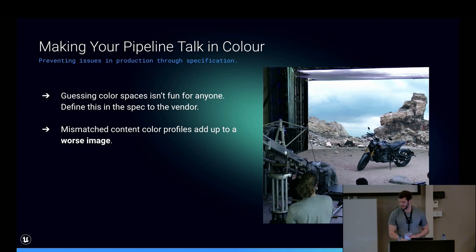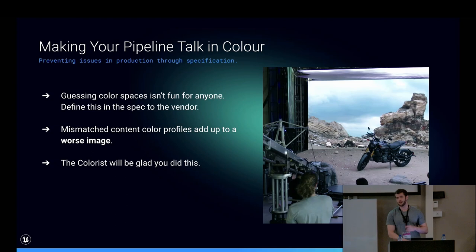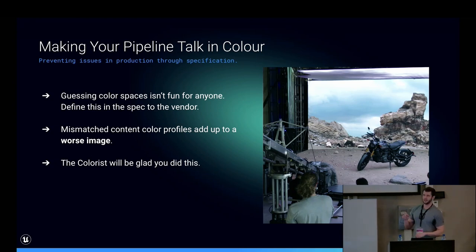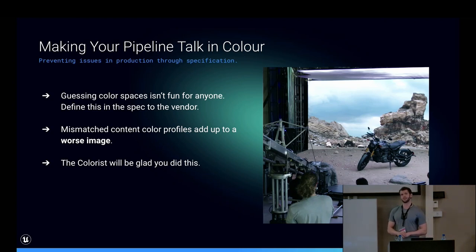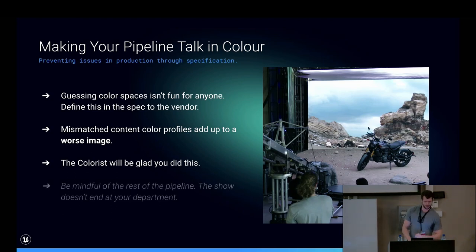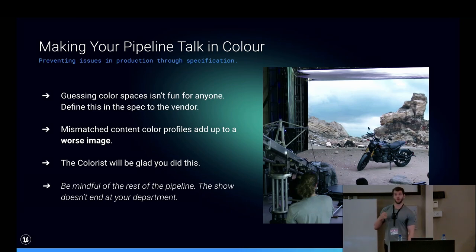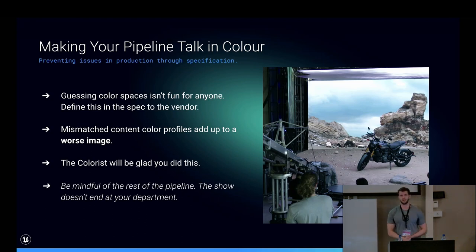You get a worse image, and your colorist will not appreciate it. If you get to grading and you haven't done this, and they try to make adjustments, it'll do weird stuff — not what they want. Move your mid-tones and you get something on one asset that's a little greener than it really should be if it was wrong. The key point is: be mindful to the rest of the pipeline. The show doesn't stop at your department just because you don't work on it anymore. A film is made up of 30 or 40 different departments that are affected by this problem.